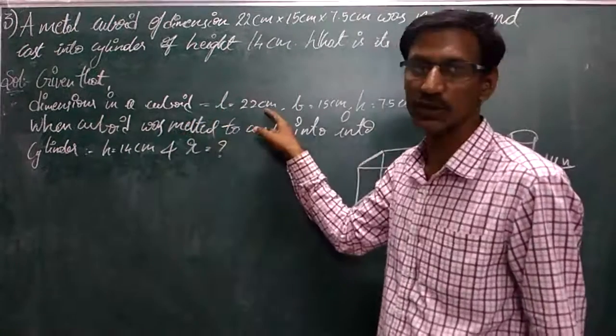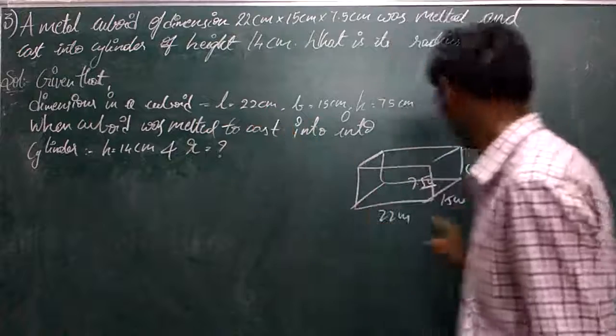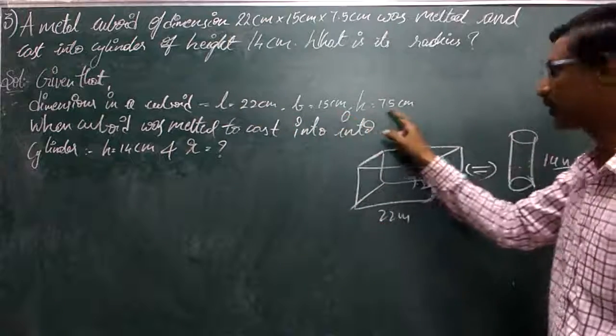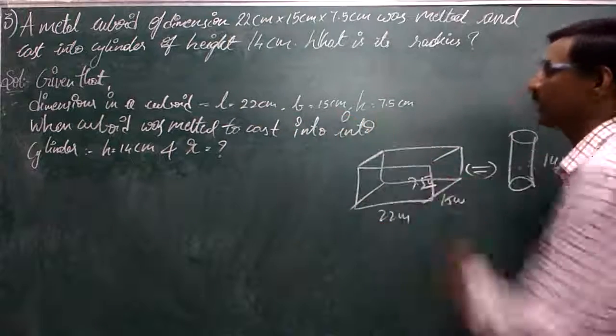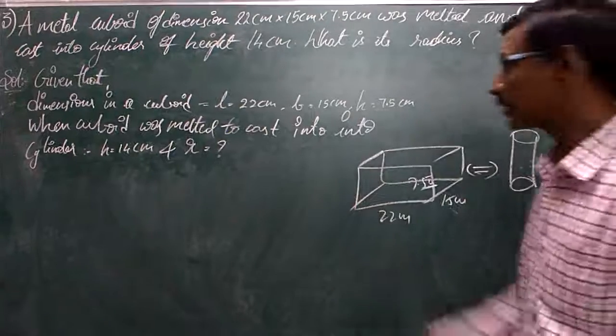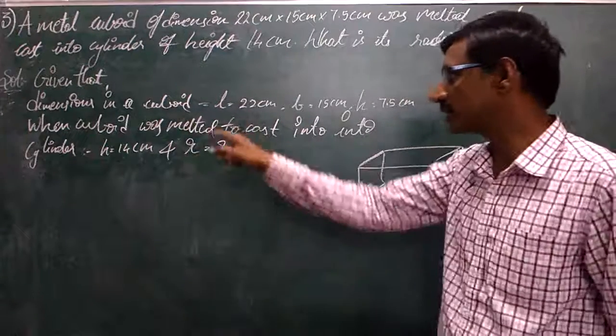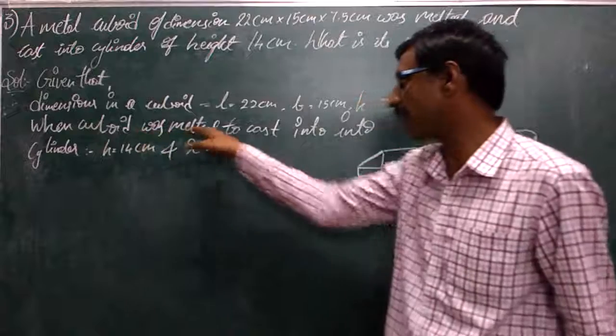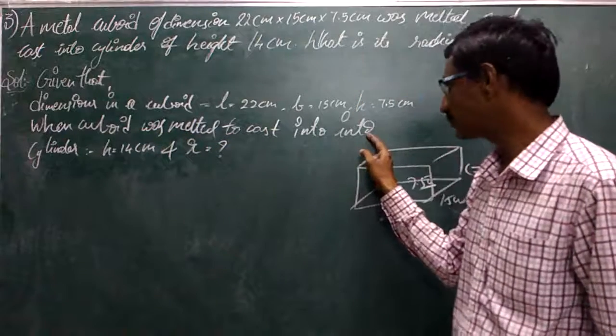Length is equal to 22 cm, height is 7.5 cm. So this is melted. When the cuboid is melted and cast into a cylinder...